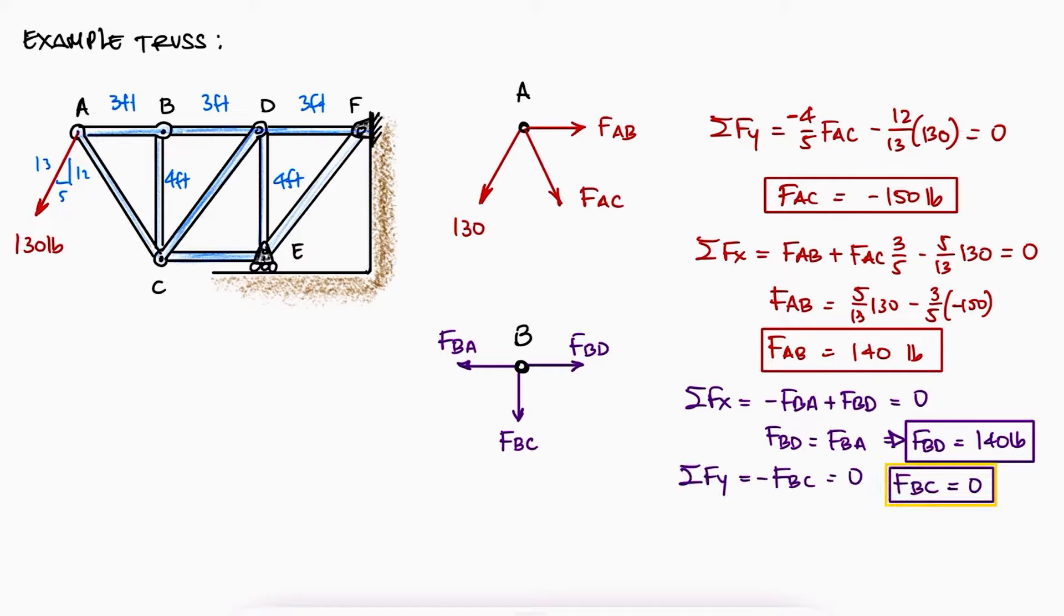Notice that FAB and FBA have the same magnitude. There's no need to add an extra negative sign because the direction of the vectors itself already has the orientation information.